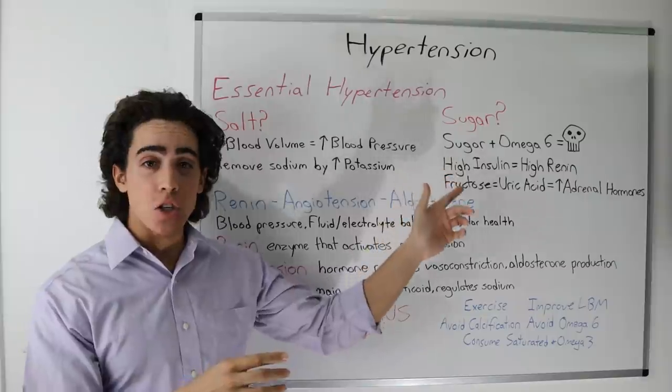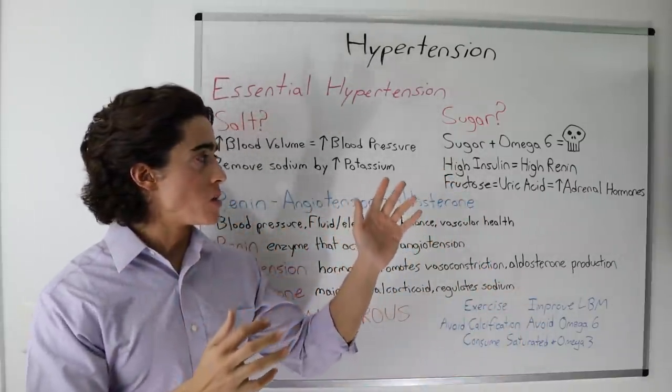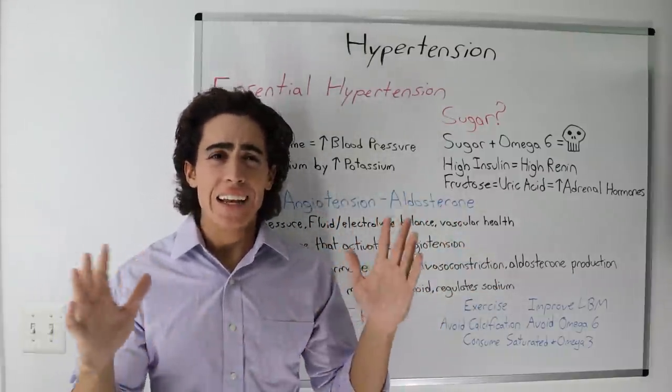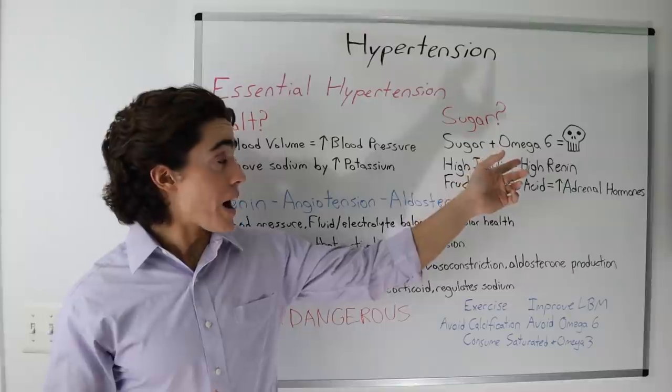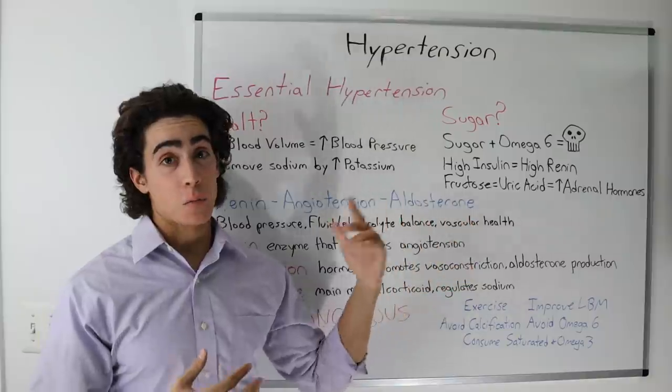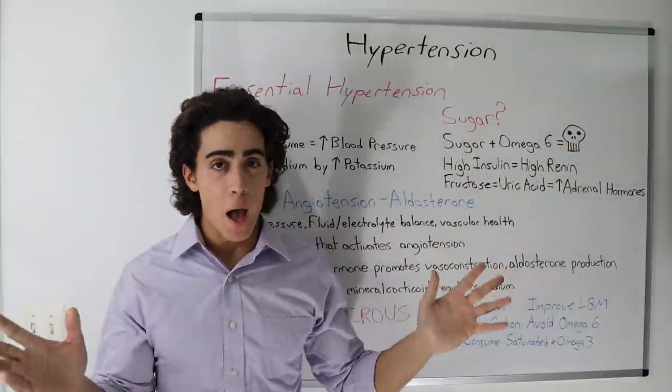So the real problem is a high sugar, high inflammatory diet. Keep in mind, sugar is always pinned as the bad guy. Glucose, fructose, not necessarily that bad, but when you combine it with high omega-6, processed foods, refined foods, and a lack of animal vitamins, you have the big bad skull. Bad stuff happens.